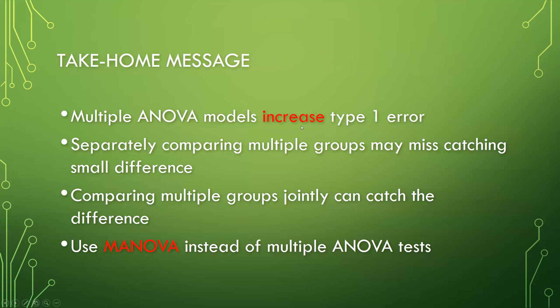Here are some take-home messages from this tutorial. First, be aware when conducting multiple ANOVA models for multiple comparisons, because the chance of Type 1 error increases. Moreover, comparing multiple groups with multiple ANOVA models separately could miss small but significant differences. But if we compare multiple groups jointly using MANOVA, it can help us catch those missing but significant differences. In conclusion, when dealing with multiple groups comparison, use MANOVA instead of multiple ANOVA tests.